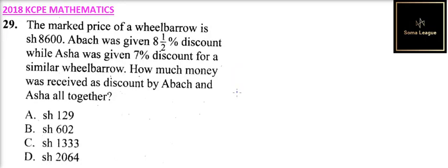Question number 29. The market price of a wheelbarrow is 8,600 shillings. Abach was given 8.5% discount while Asha was given 7% discount for a similar wheelbarrow.